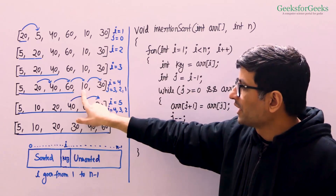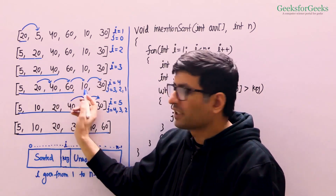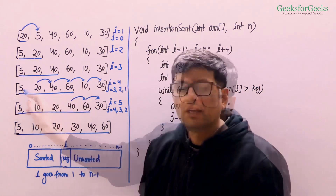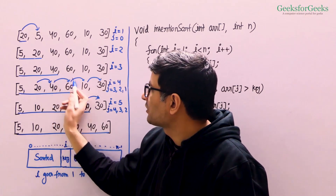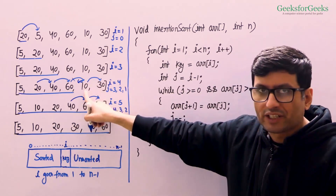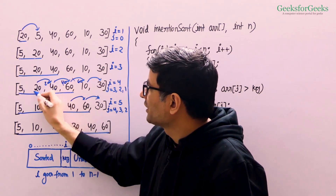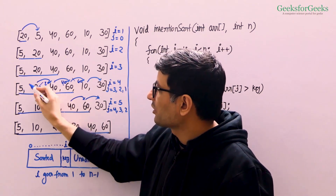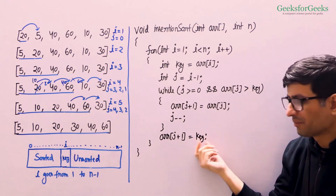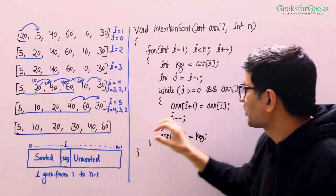For example, when i is at element 10, we go left and keep running the loop while elements are greater than the key. We run the loop for 60, 40, 20 and stop at 5. While running the loop, we move all elements one position ahead — 60 moves right, then 40, then 20. That's why we stored the current element in the variable key, since we overwrite it. After the inner loop finishes, we write the key (10) at arr[j+1], which is the created space.